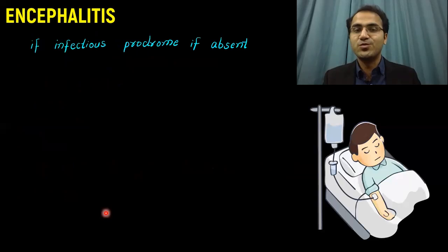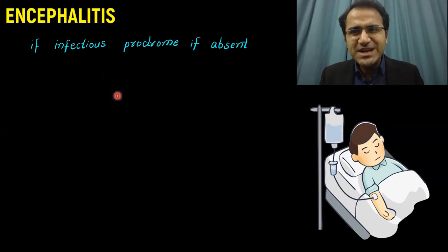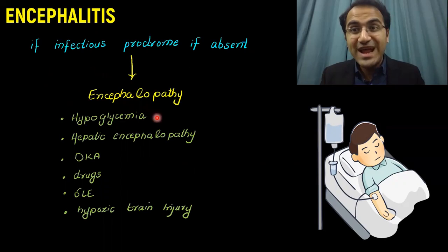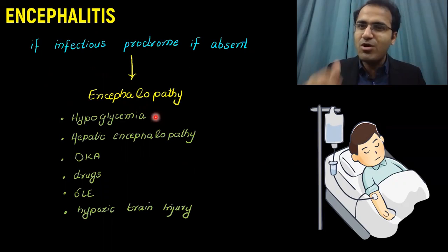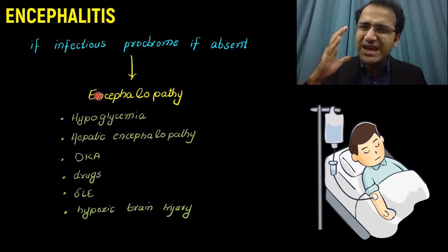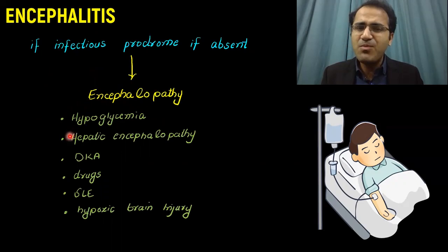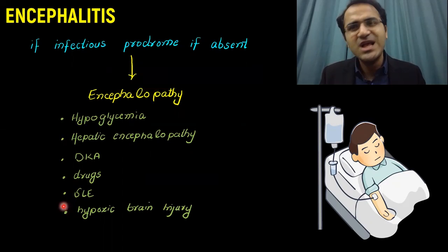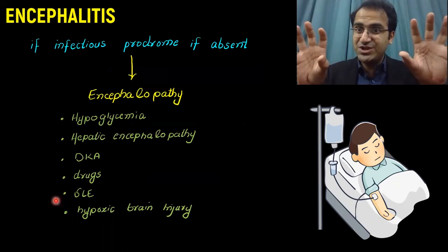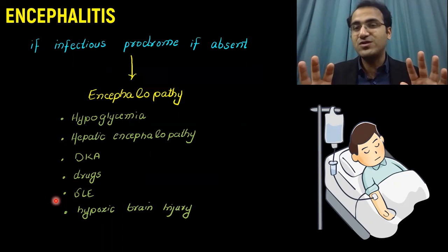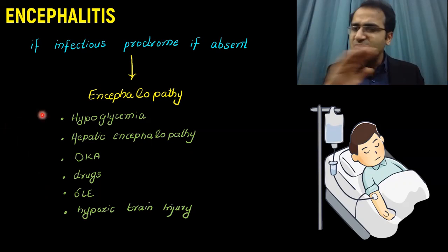If the infectious prodrome is absent and patient has developed a deep comatose state or altered mental status, then you should consider the diagnosis of Encephalopathy. Encephalitis is infection of the brain, whereas Encephalopathy can be due to metabolic causes. If the infectious prodrome is not there, you should consider Encephalopathy in your differentials — hypoglycemia, hepatic encephalopathy, DKA, drugs, SLE, hypoxic brain injury — because Encephalitis is infection of the brain and Encephalopathy occurs due to metabolic causes that disturb the brain.